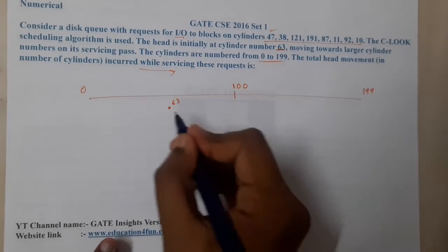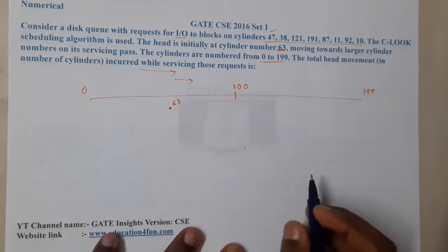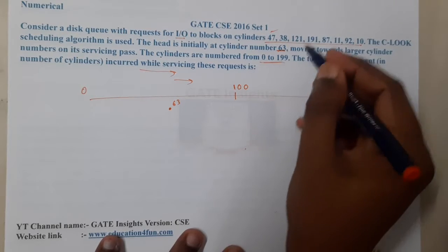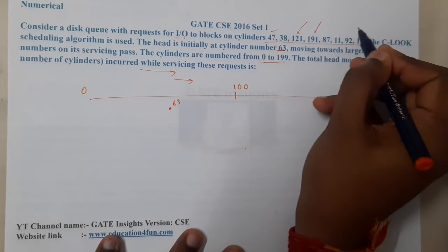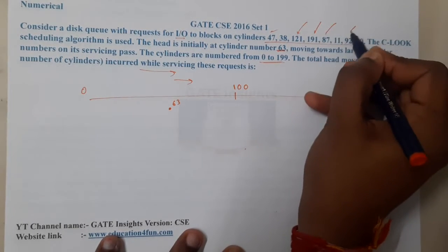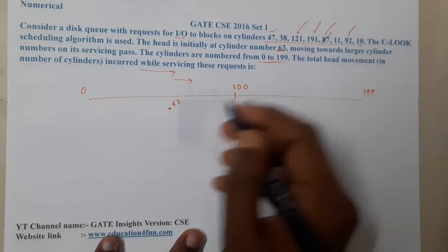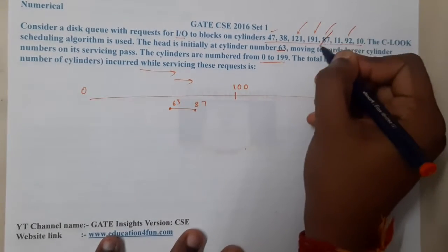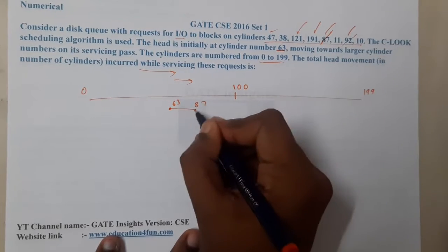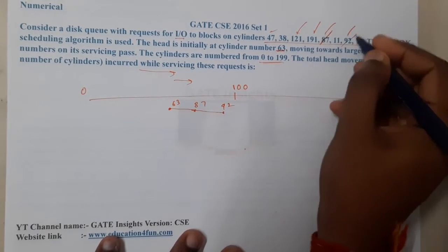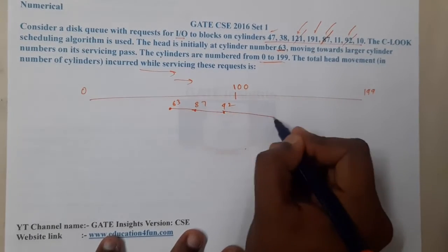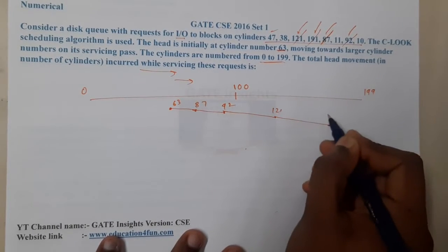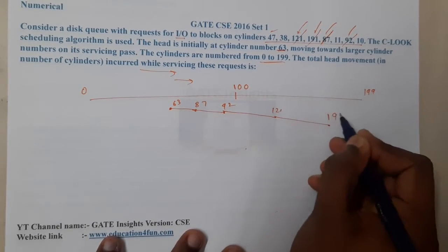We are moving in this direction. After cylinder 63, the pending requests are 121, 191, 87, and 92. The nearest is 87, so we go to 87, then 92, then 121, then 191. Now we are currently at 191.